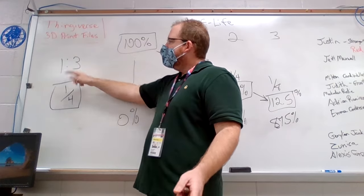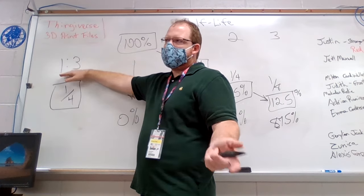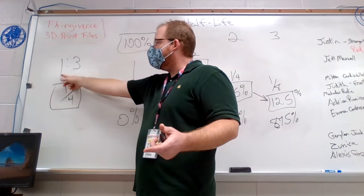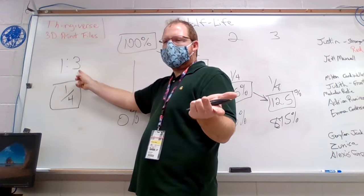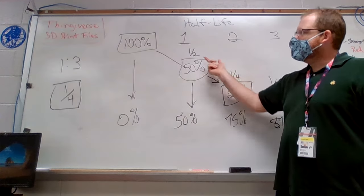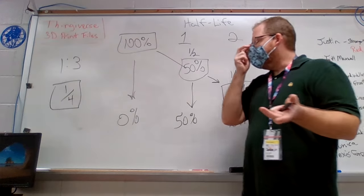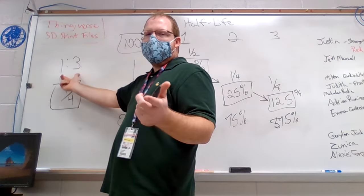And so those fractions can kind of be related to the problem. You see on the problem, they say you have a one to three ratio of uranium to lead. That means for every one part uranium, you have three parts lead. The problem is one third doesn't really fit in to any of these fractions. You have one half and one quarter, but not one third.